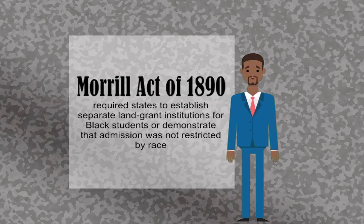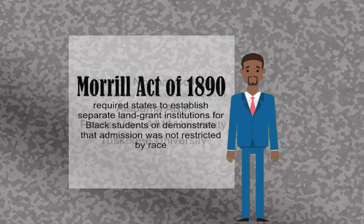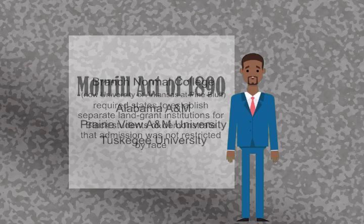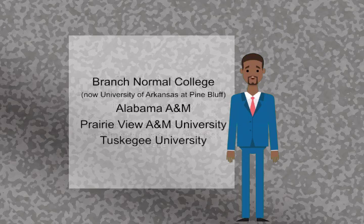The second Morrill Act of 1890 required states to establish separate land grant institutions for black students or demonstrate that admission was not restricted by race. The act granted money instead of land and resulted in the establishment or benefit of several historically black universities and colleges, including Branch Normal College, now the University of Arkansas at Pine Bluff, Alabama A&M, Prairie View A&M University, and Tuskegee University.